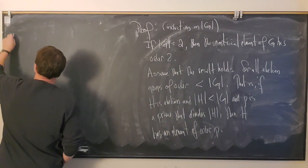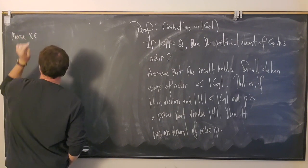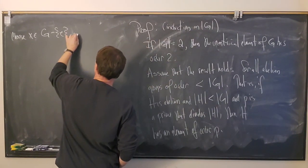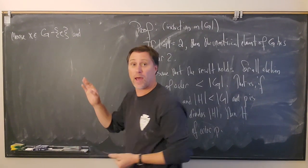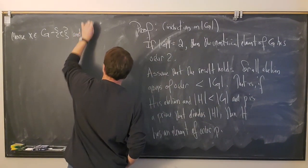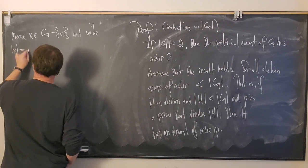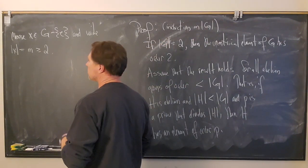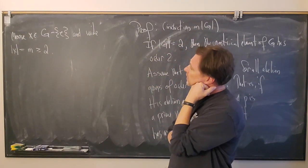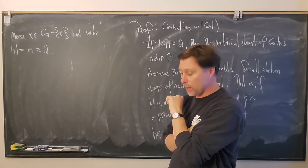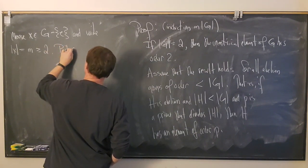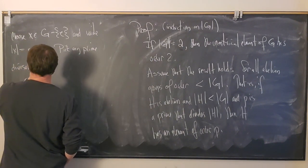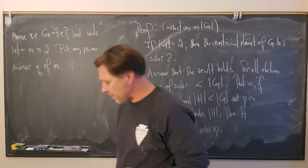Now let's choose a non-trivial element x in G minus {e}. Write the order of x equal to m, and we know m is greater than or equal to 2. Since m is a positive integer, it has prime divisors — pick any prime divisor, call it q, of m. So m equals q times k.